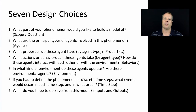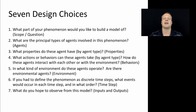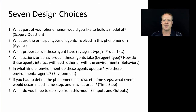So now we have a basic idea of what we want our model to look like and what we want to get out of it. So now we need to think about how are you actually going to build that model. Right here I have laid out seven design choices you need to make when constructing an agent-based model, and these go through step by step thinking about what that model is going to look like.